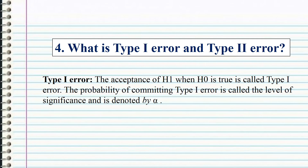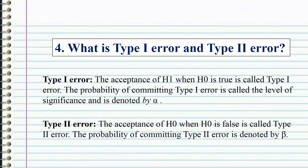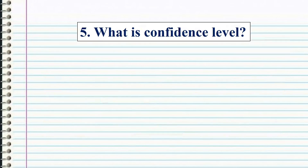Type II error: the acceptance of H0 when H0 is false is called a Type II error. The probability of committing a Type II error is denoted by beta.